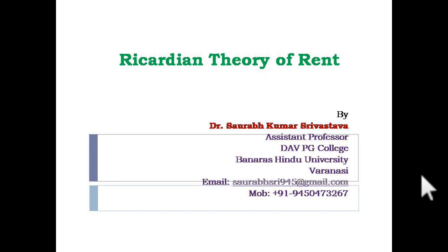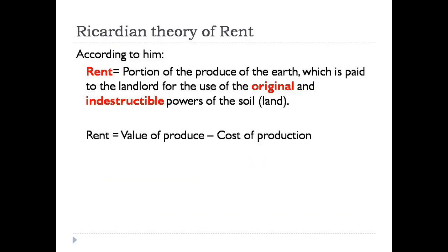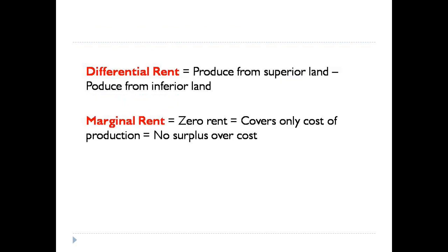Moving ahead to the Ricardian theory of rent: Ricardo was the main proponent of this theory. He uses the original and indestructible powers of nature, which have been given by nature to humans, who use it and get profits. According to him, rent is a portion of the produce of the earth which is paid to the landlord for the use of the original and indestructible powers of the soil. The rent equals the value of produce minus cost of production — any surplus over the cost can be called rent.